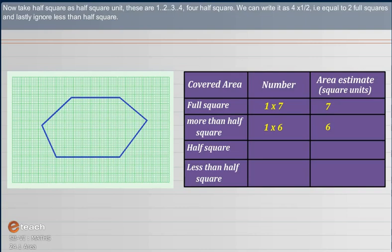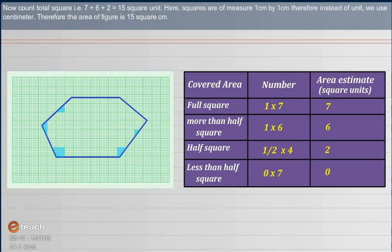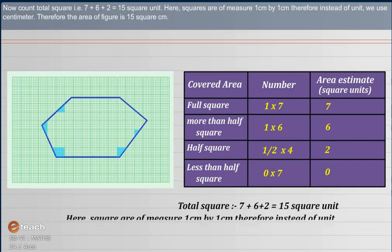Now take half square as half square unit. These are 1, 2, 3, 4, 5, 6. These are 1, 2, 3, 4 half squares. Squares are of measure 1 cm by 1 cm.